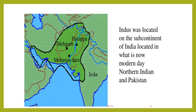The Indus Valley was located on the subcontinent of India, which is now modern-day northern India and Pakistan. It spreads eastwards to Delhi and the northern part of Pakistan. You can see the map and the picture of the subcontinent where India and Pakistan were considered as a subcontinent.